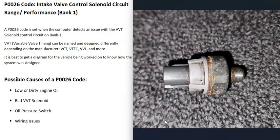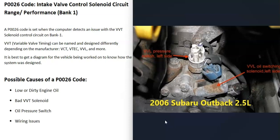Another possible cause is a bad oil pressure switch — don't confuse this with the engine oil pressure switch, which is separate. Some variable valve timing systems have oil pressure switches usually located right next to the solenoid. The computer uses these to control the solenoid, oil flow, and oil pressure. This is very common in 2001 to 2010 Subarus and some Nissans.